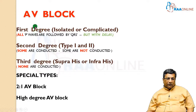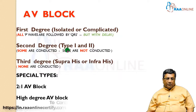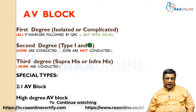First degree AV block can be isolated or complicated. Second degree AV block is divided into type 1 (Mobitz type 1 / Wenckebach) or type 2 (Mobitz type 2). Third degree AV block can be supra-His complete heart block or infra-His complete heart block.